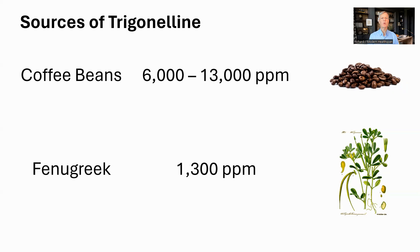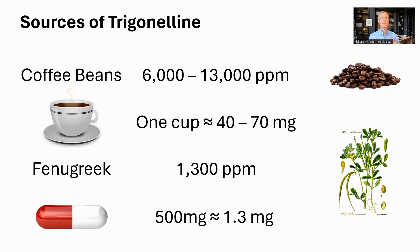If you want to try trigonelline, where can you get it? Trigonelline is present in a number of sources, but the ones with the highest concentration are coffee beans at 6,000 to 13,000 parts per million, and fenugreek at 1,300 parts per million. One cup of coffee contains 40 to 70 milligrams of trigonelline, from another paper rather than my own calculations.